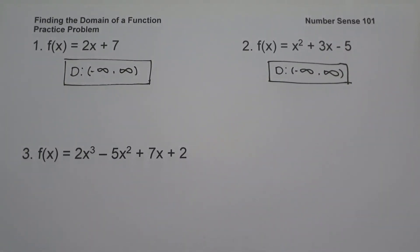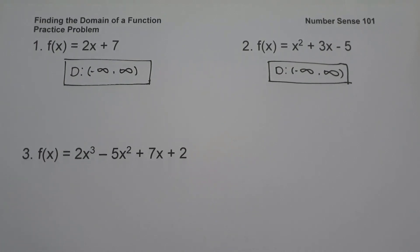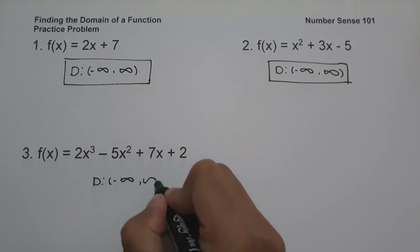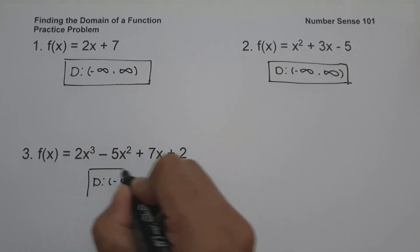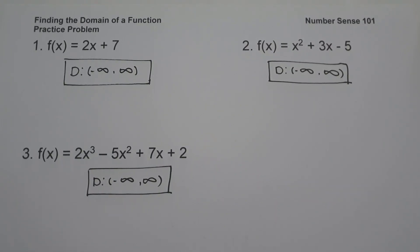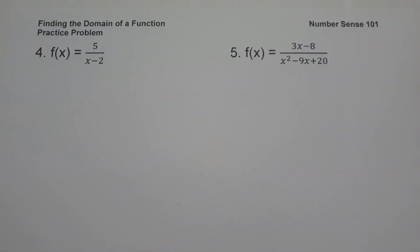What about number three? f of x is equal to 2x cubed minus 5x squared plus 7x plus 2. If you have a polynomial function, the domain is still all real numbers, from negative infinity up to positive infinity. Always remember: if there are no fractions or square roots, the domain is always all real numbers.